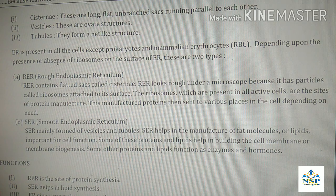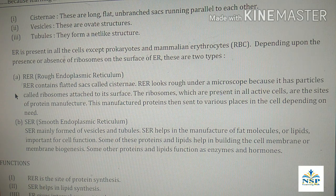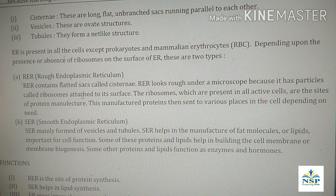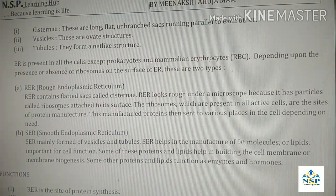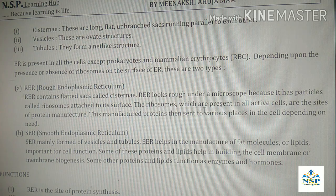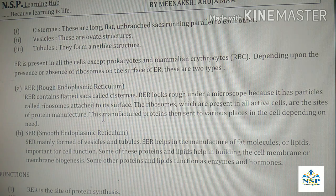Depending upon the presence or absence of ribosomes on the surface of ER, there are two types. RER: rough endoplasmic reticulum. RER contains flattened sacs called cisternae. RER looks rough under a microscope because it has particles called ribosomes attached to its surface. The ribosomes present in all active cells are the site of protein manufacture. This manufactured protein is then sent to various places in the cell depending on the need.